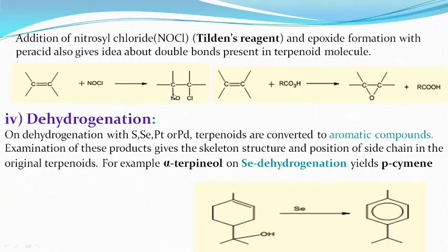Addition of nitrosyl chloride, that is Tilden's reagent, and epoxide formation also give information about the double bonds present in the terpenoid molecule. Here is the nitrosyl chloride addition, and here peracid oxidation of the double bond takes place.